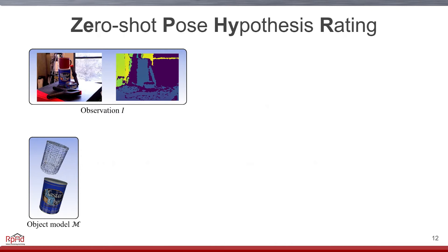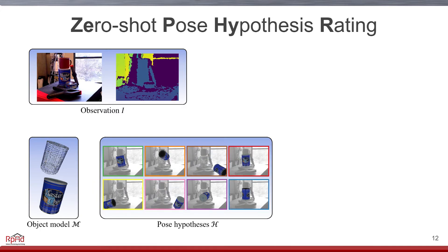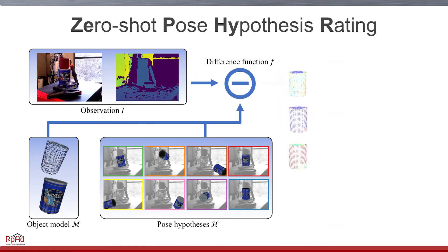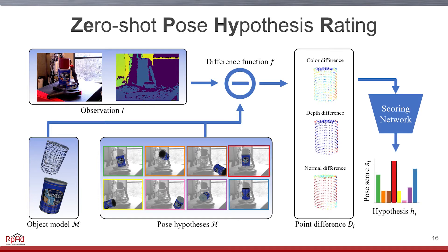Given an observation image and the object model, we estimate a set of pose hypotheses using the observation data. In our case, we used hypotheses generated by point-pair features, but any hypothesis generation method will work here. These hypotheses are then compared with the observation, using projected model points and simple distance functions, to produce point difference features. These point features are then processed by our scoring network, to produce a distribution over pose hypotheses, whose maxima is the most accurate object pose.